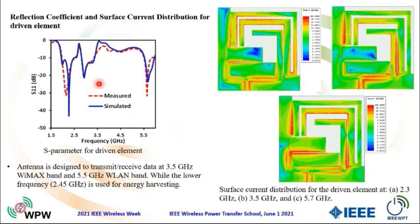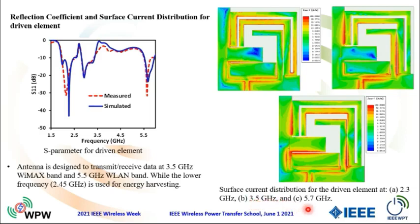Here are the results for the reflection coefficient. The antenna is designed to transmit and receive data at 3.5 GHz — the WiMAX band — and at 5.5 GHz — the WLAN band. The band at 2.45 GHz is used for energy harvesting. This figure shows the current distribution at the three bands at 2.45, 3.5, and 5.7 GHz.